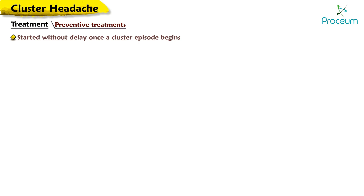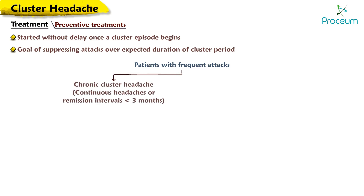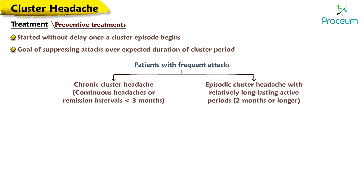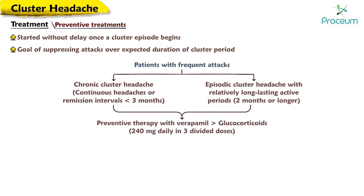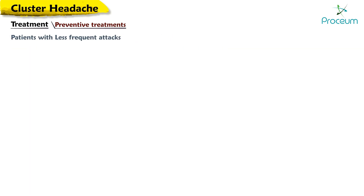Preventive therapy should be started without delay once a cluster episode begins, with the goal of suppressing attacks over the expected duration of the cluster period. For patients with frequent attacks, chronic cluster headache, remission intervals of less than three months, or episodic cluster headache with active periods lasting two months or longer, guidelines recommend initial preventive therapy with verapamil rather than glucocorticoids or other agents. The starting dose is usually 240 mg daily in three divided doses; most patients respond to 240–480 mg daily, with titration up to 960 mg daily necessary for some patients.